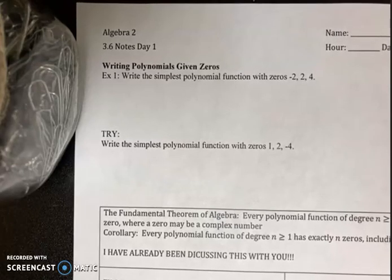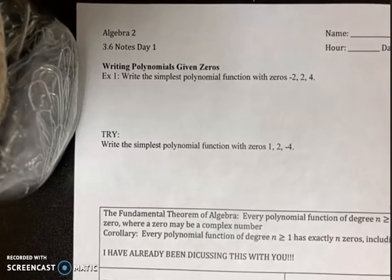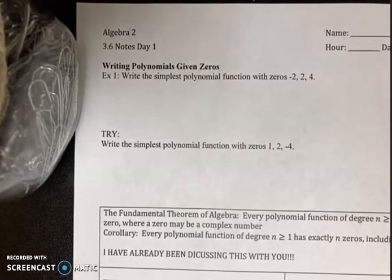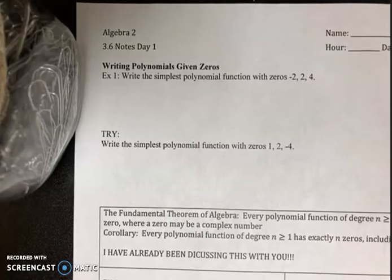Today's lesson is going to be focusing on what's called the fundamental theorem of algebra. We've actually been doing this the whole time — you just didn't realize it. Today basically serves as a review of everything we've been talking about in sections 3.4 and 3.5. The first example asks us to write a polynomial given the zeros.